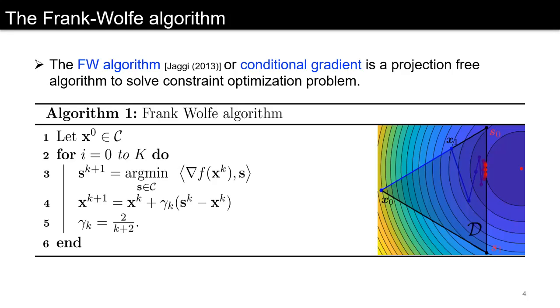We take a convex combination of the previous iterate and the solution to the linear minimization problem to obtain the new iterate, and the step size we consider is a diminishing step size.